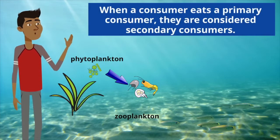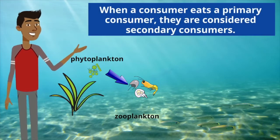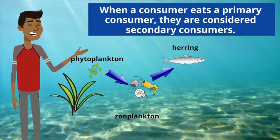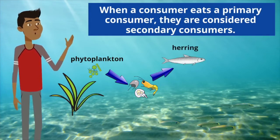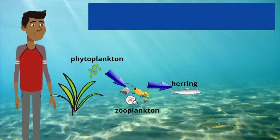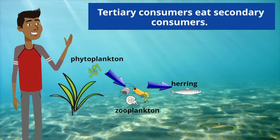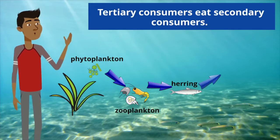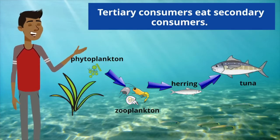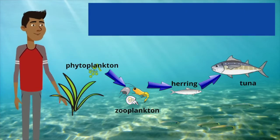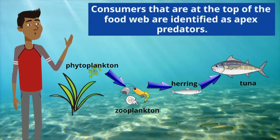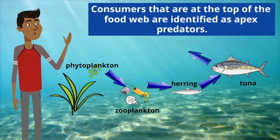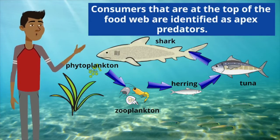When a consumer eats a primary consumer, they are considered secondary consumers. Tertiary consumers eat secondary consumers. Consumers that are at the top of the food web are identified as apex predators.